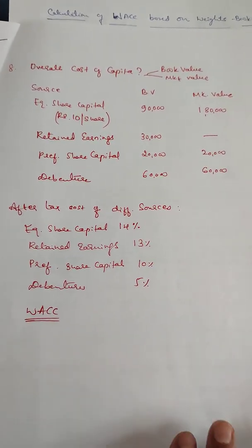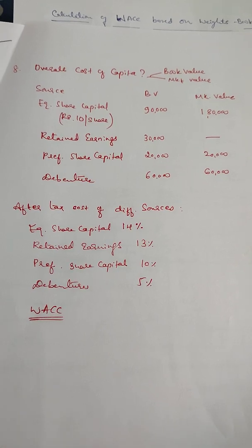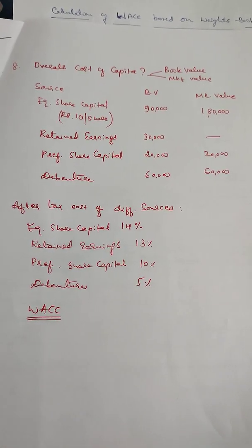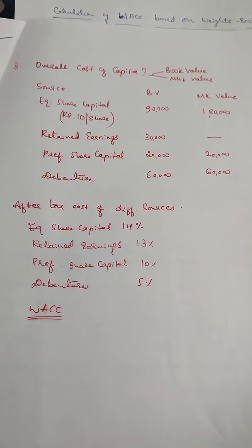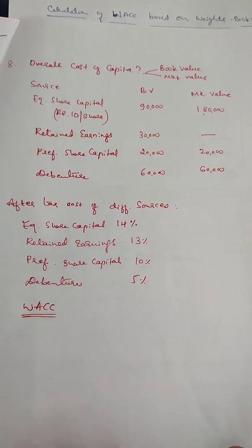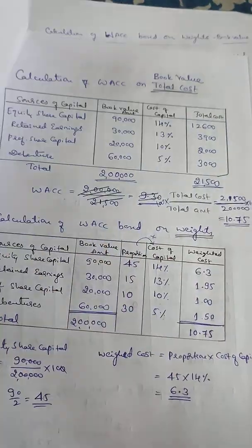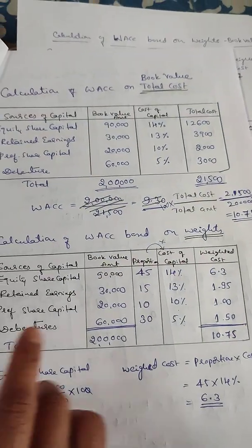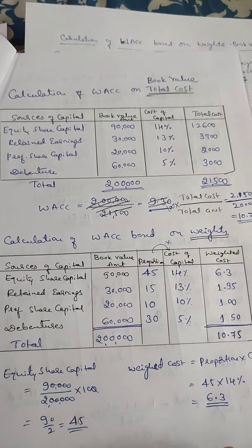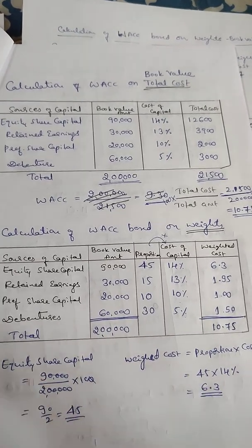You can see the cost of capital — equity share capital, retained earnings, preference share capital, debentures etc. So you just use the values and get the output. You can use the solution.